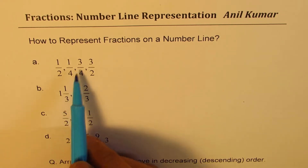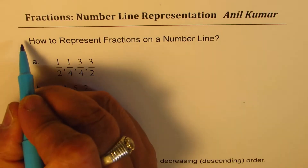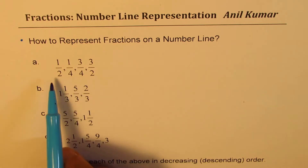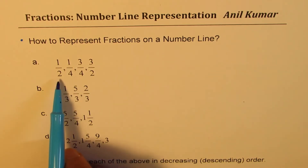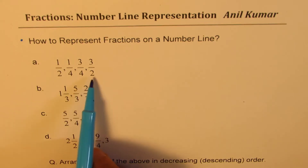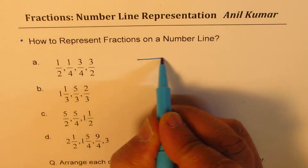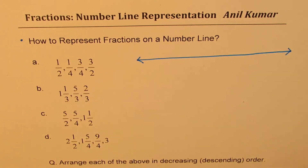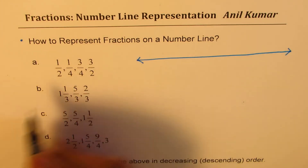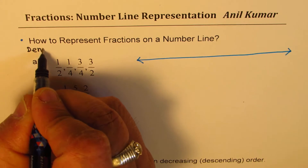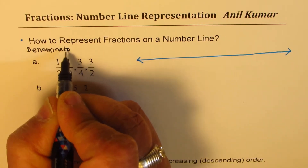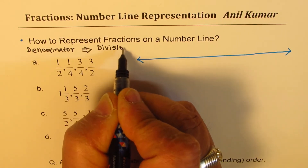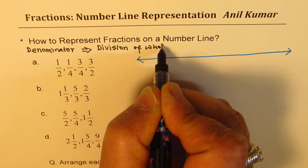Let's begin with the very first one. We'll focus on how to represent fractions on a number line. We'll begin with these four fractions. The denominators are 2, 4, 4, and 2. Always in fractions, the denominator decides the division of a whole. So the denominator gives you the division of the whole. We see the denominator and that decides the division of the whole number.